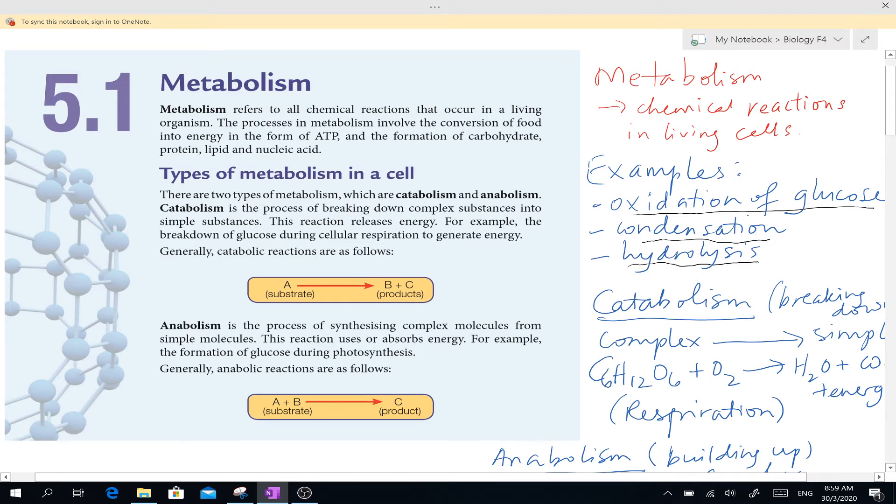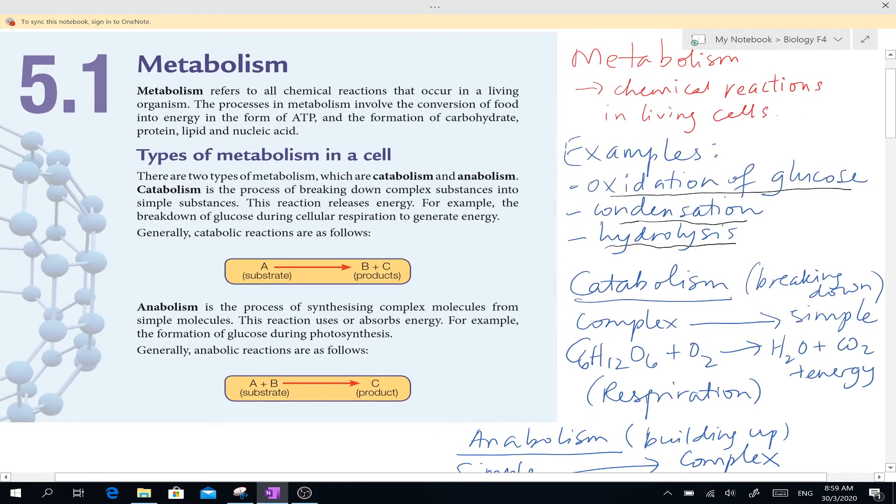Now let's look at the two types of metabolism. First there's one called catabolism and another one is called anabolism. What's the difference? Catabolism basically means is a process which breaks down something more complex into something more simple, from something complex into simple.